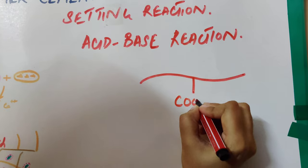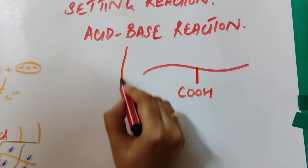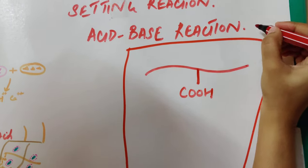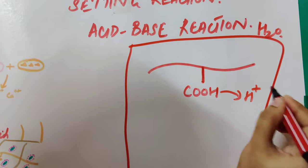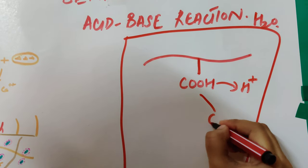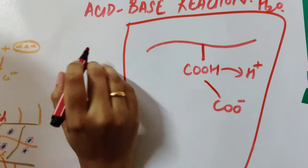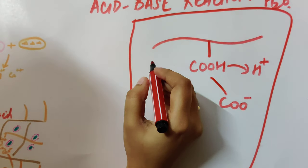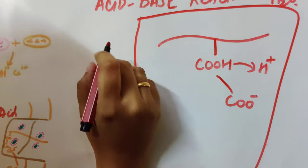What happens is that in the reaction volume in the presence of water, it is going to lose one proton which is H plus, and it will become COO minus. Then in the powder, it contains silicofluoroaluminium silicate glass. These glass particles will start leaching protons.